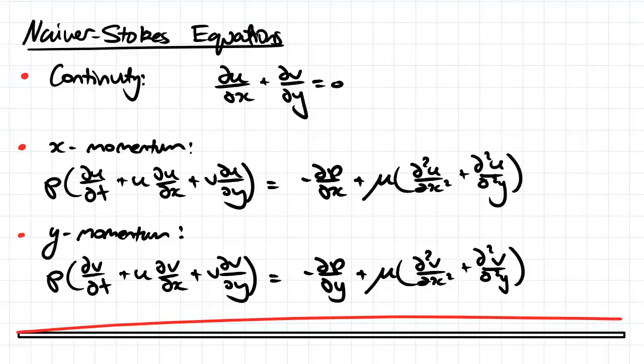The continuity equation is going to remain the same, but the first thing we can cancel out is any change of velocity with respect to time, because we're dealing with steady flow here. So we can first cancel out those two terms there.